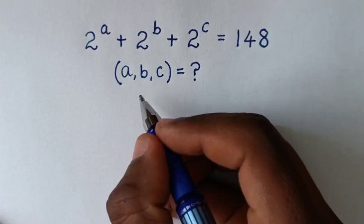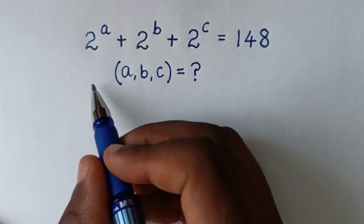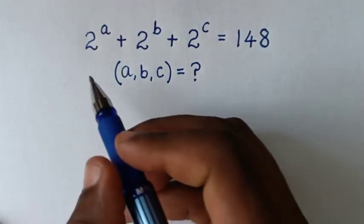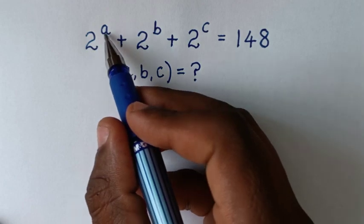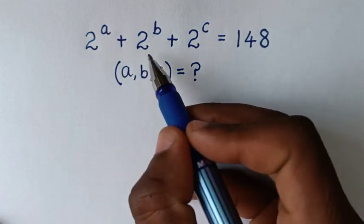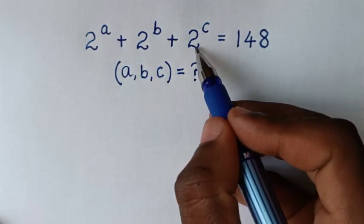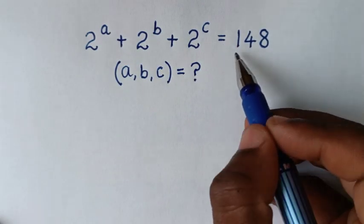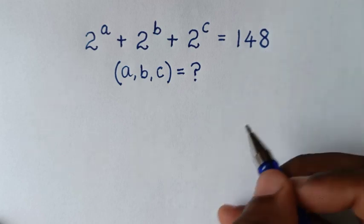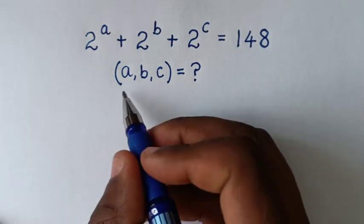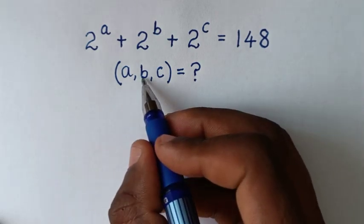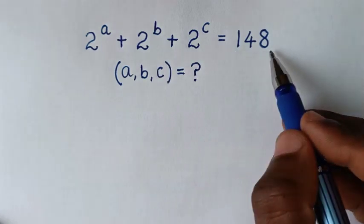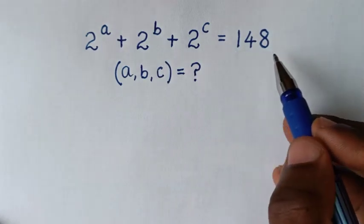Hello, you are welcome to solve this math problem, which is 2 power a plus 2 power b plus 2 power c is equal to 148, to find the values of a, b, and c from this equation.